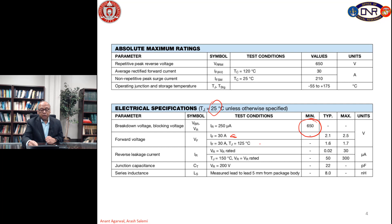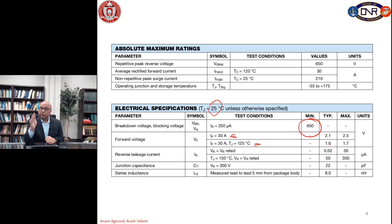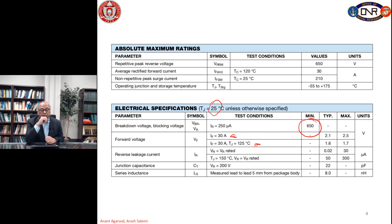If we raise the junction temperature from 25 degrees C to 125 degrees C, the forward drop reduces. Remember, this is a PIN diode. With temperature, the forward drop reduces because you get more conductivity modulation as the lifetime improves with temperature. Here you can get a typical forward drop of 1.6 volts, or maximum 1.7 volts, when 30 amps is flowing through the diode. The third characteristic is the reverse leakage current.